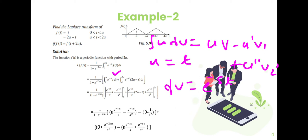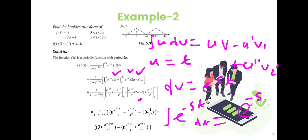For the first integral, u equals t and dv equals e to the power minus st. Integrating gives e to the power minus st divided by minus s, and differentiating t gives 1. For the second integral, u equals (2a minus t) and dv equals e to the power minus st. Integrating gives e to the power minus st divided by minus s, and differentiating (2a minus t) gives minus 1, which changes signs in the formula.